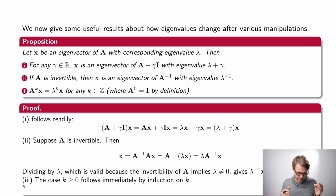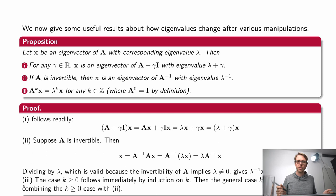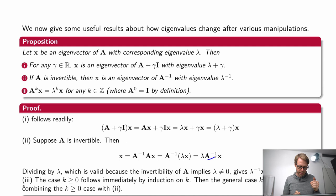For the third proposition, for k greater than or equal to 0, A to the power of k times x equals lambda to the power of k times x, which we get by induction over k. For negative k, we combine this result with the second proposition — we're taking A to the minus 1, minus 2, and so on. Once we know the eigenvectors and eigenvalues of A inverse, we can again do an induction over that.